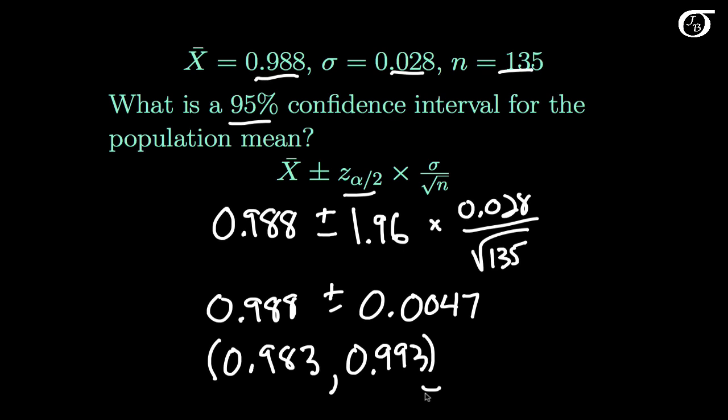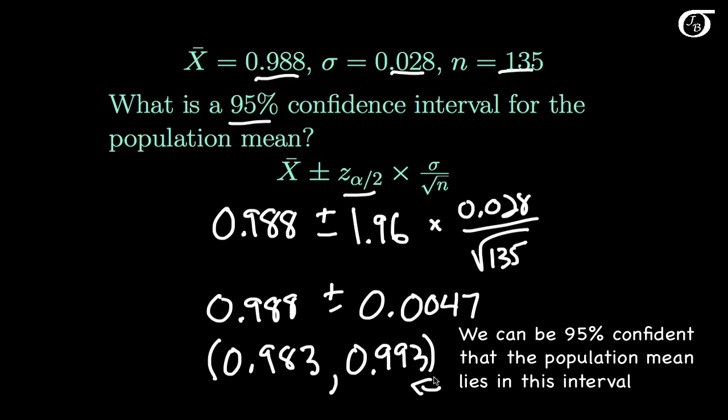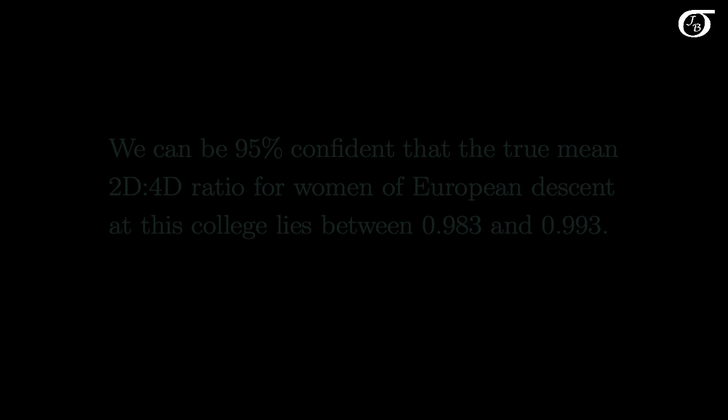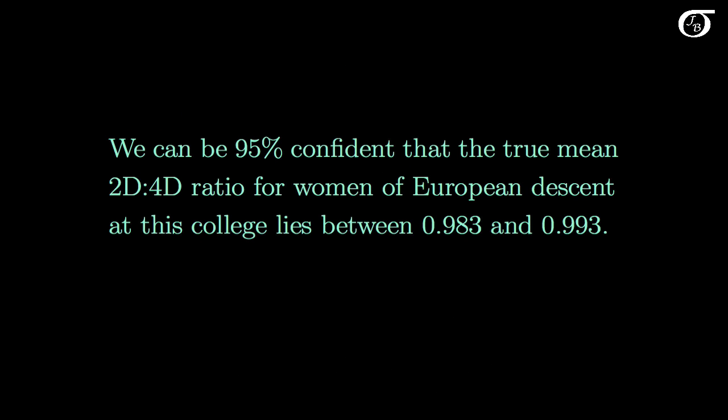So we can be 95% confident that the population mean mu lies within this interval. But what does that mean in the context of this problem? It means that we can be 95% confident that the true mean 2D to 4D ratio for women of European descent at this college lies between 0.983 and 0.993.